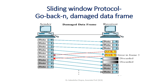For the sliding window protocol, since we can have multiple data frames transmitted at the same time, in a Go-Back-N damaged data frame scenario, for example, data frames 0, 1, 2, 3 were being sent, and ACK 3 was sent by the receiver, meaning a positive acknowledgement for frames 0, 1, 2 was received. Then frames 4 and 5 are sent, and a negative acknowledgement NAK 3 is sent, indicating frame 3 was not received correctly. In that scenario, frames 4 and 5 will be discarded because Go-Back-N requires re-transmission from the same number where the negative acknowledgement was received.